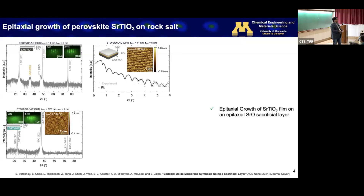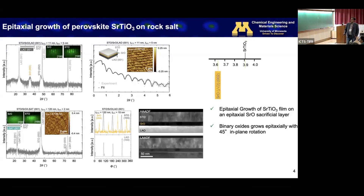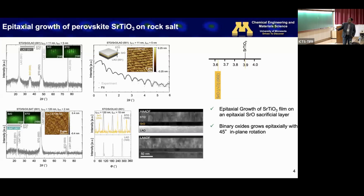What is the epitaxial relationship between the sacrificial layer and the underlying substrate? Using phi scans with X-rays, we found the binary oxide is 45 degrees rotated onto the substrate to minimize the lattice mismatch. However, when we looked at TEM, the films were found to have a lot of contrast in the HAADF STEM image. Those contrasts are coming from threading dislocations — not surprising, because strontium oxide and strontium titanate are significantly lattice-mismatched. So can we use a better-matched sacrificial layer to avoid this problem?